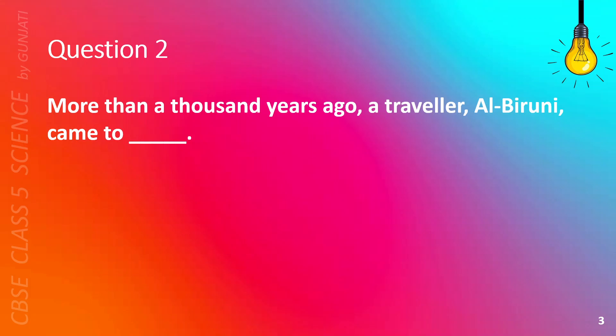Question 2. More than a thousand years ago, a traveler, Al-Biruni, came to blank. A. Europe, B. Uzbekistan, C. India, or D. America. The correct answer is C, India.